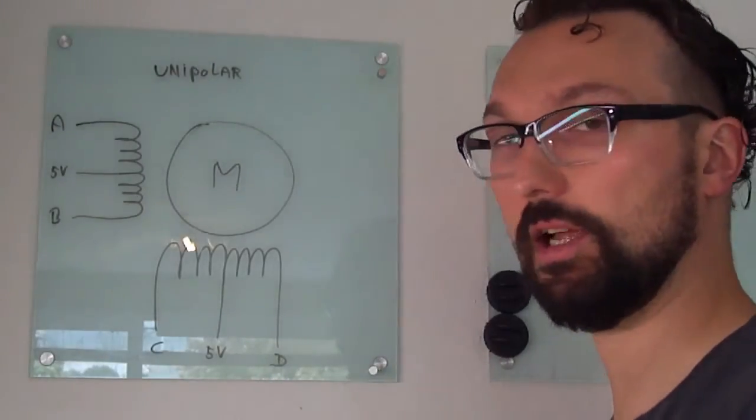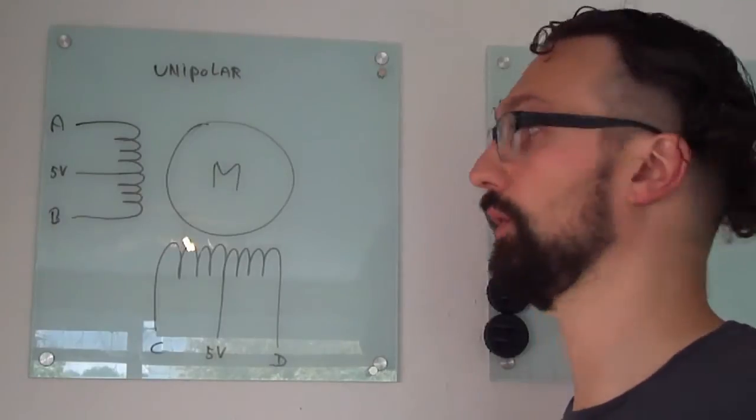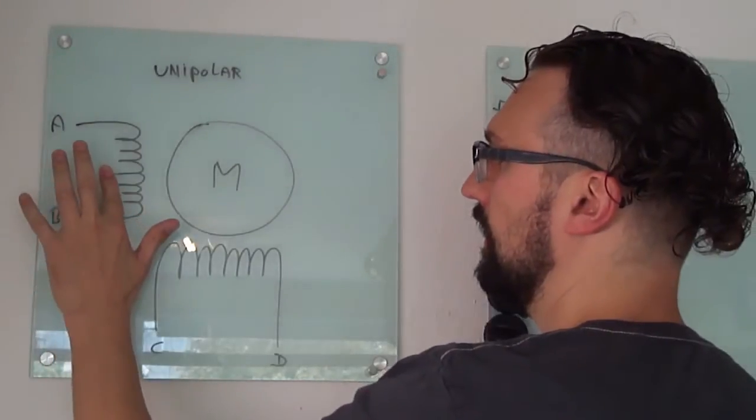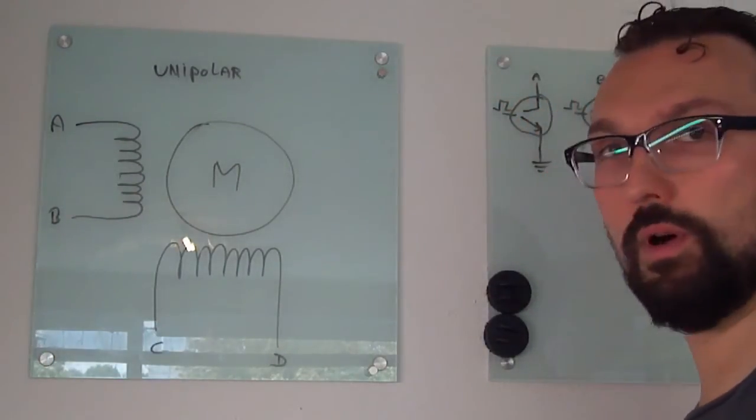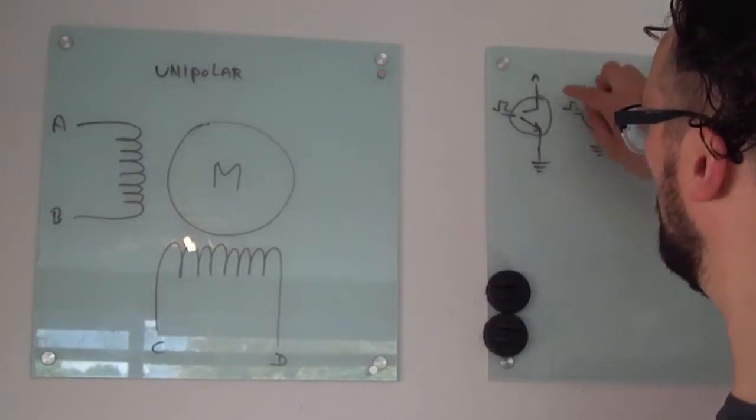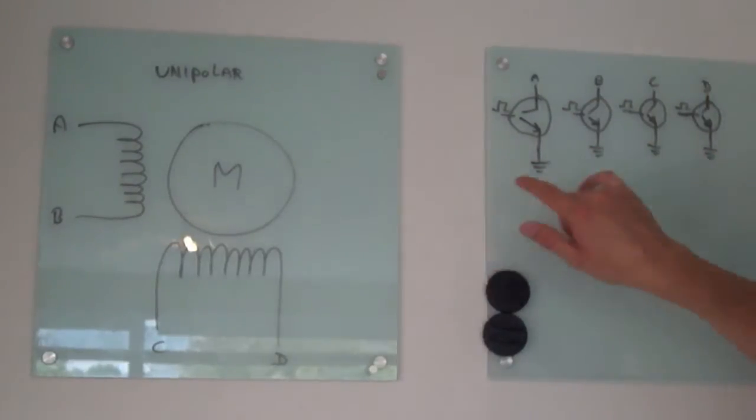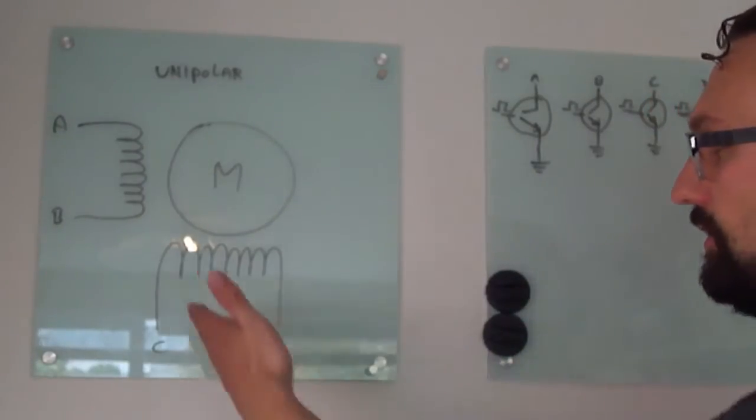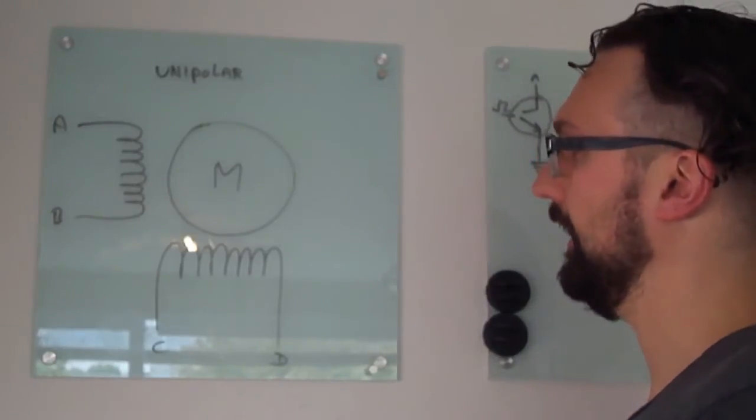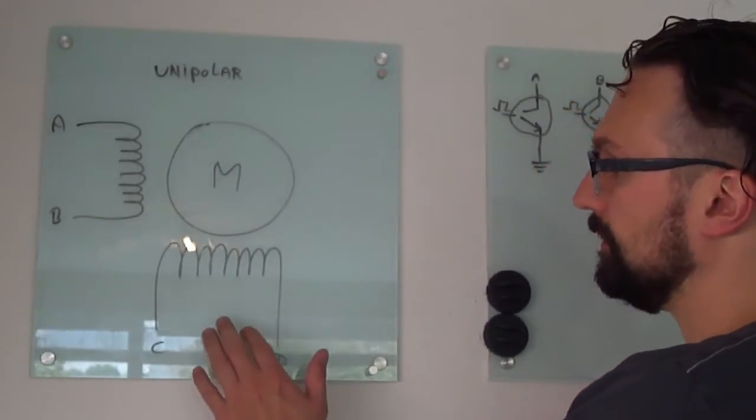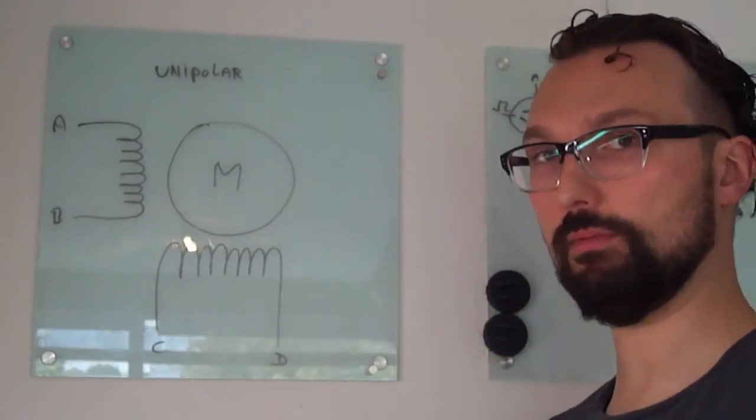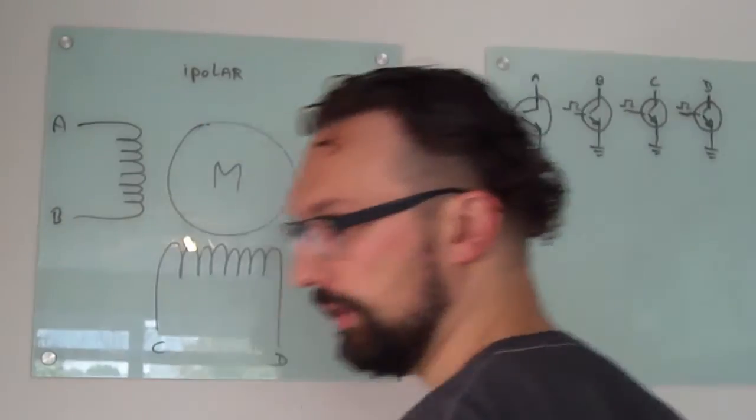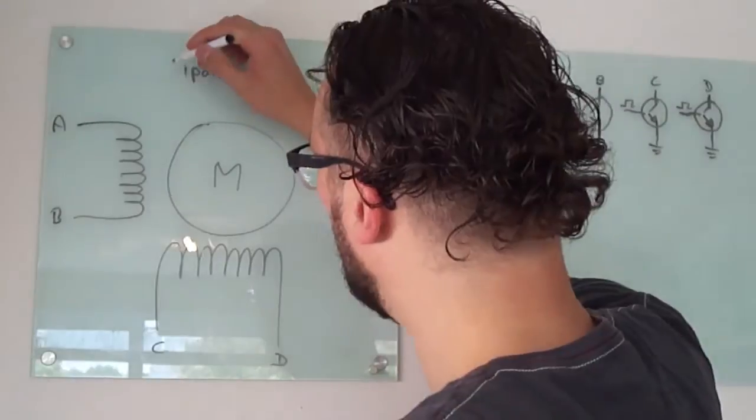But I made a mistake. I ordered the wrong motors or got different motors. What I actually received are motors without this. With this circuit inside the motor, this schematic doesn't work anymore. I can ground this or ground that, but there is no voltage from the other side. I need a different schematic. These motors are called bipolar because they have two poles for each one.